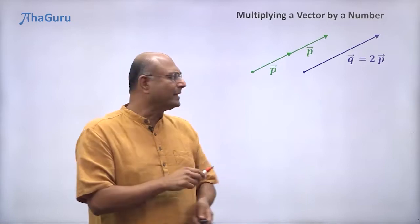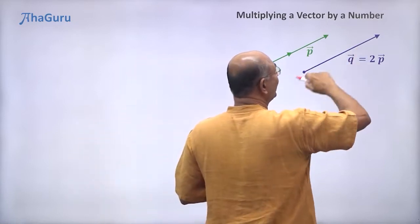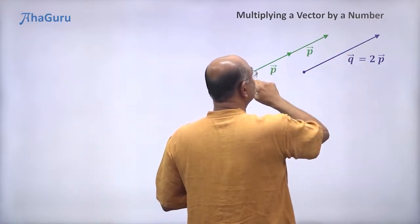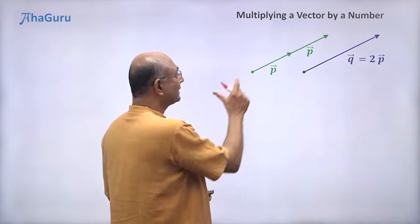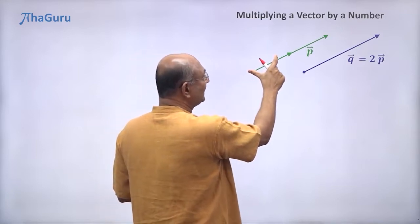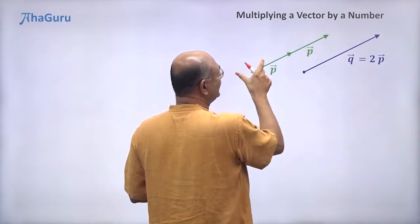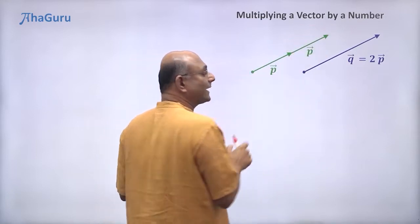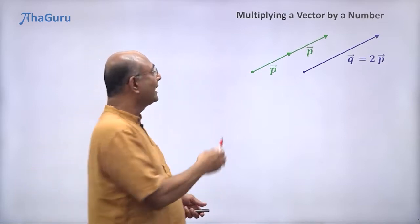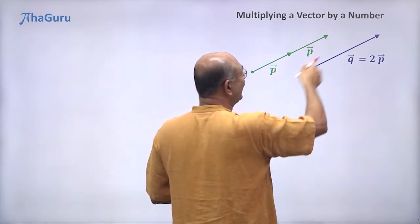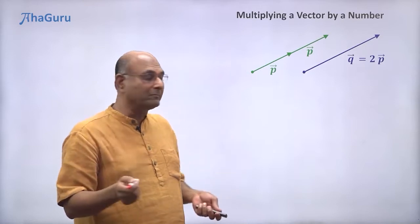What does that mean? The length of q vector is double the length of p vector. This q vector's length is 2 times p vector's length. And the direction of p vector and the direction of q vector — they are the same.